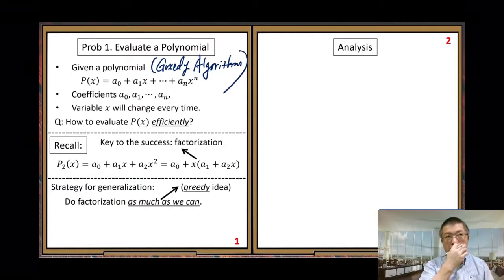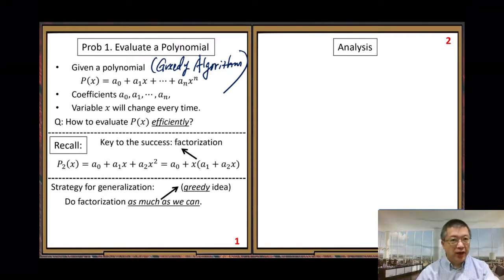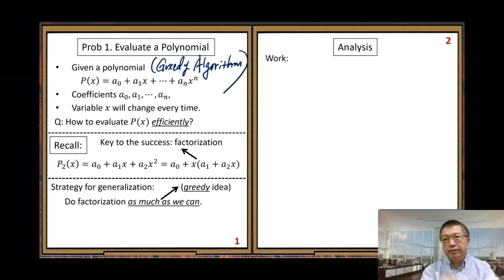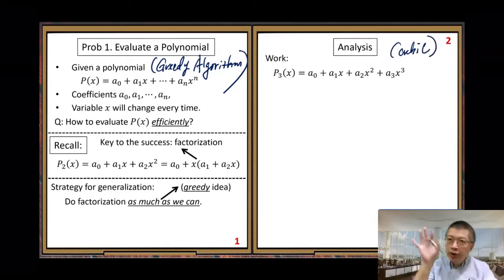Later I will give a few more examples using the greedy algorithm as optional material. Now let's apply this method. To see it clearly, let me use another simple example where n equals 3, p3(x) — the cubic polynomial. We move from the quadratic polynomial to the cubic polynomial.